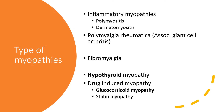So we have inflammatory myopathies, which are polymyositis, dermatomyositis, and also polymyalgia rheumatica. We also have fibromyalgia, hyperthyroid myopathy, and drug-induced myopathies like glucocorticoid myopathy, statin myopathy, and other types of drug-induced myopathies.